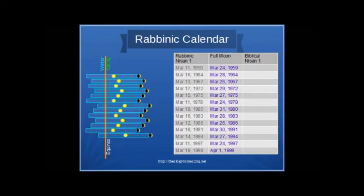Now I purposely selected a group of years where the first full moon of the year is very close to the equinox to show the rabbinic criteria in action. As you can see, every one of these Nisans contains the first full moon of the year. This is what the rabbinic criteria looks like.